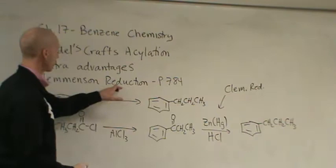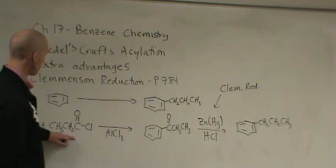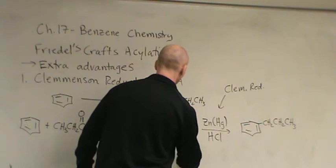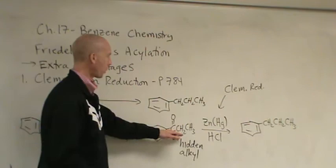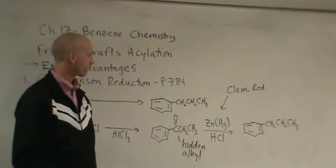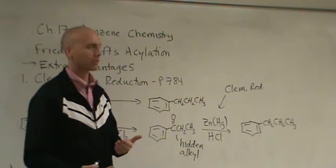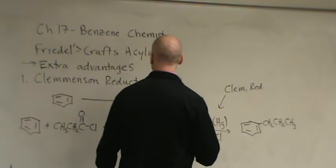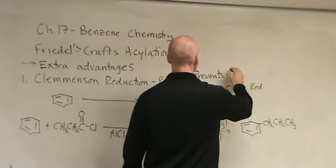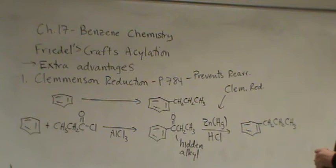So, this is a synthetic strategy because I've put this acyl group on that I can call maybe a hidden alkyl group or a hidden propyl group, right? Because all I've got to do is react it with this reagent set here and it converts it to the alkyl group. So, this prevents a rearrangement and it really allows me to add any alkyl group on I want to of however length without giving me any kind of rearrangement. So, the first advantage is the prevention of rearrangements. That's our first advantage or strategy that this acylation reaction affords.